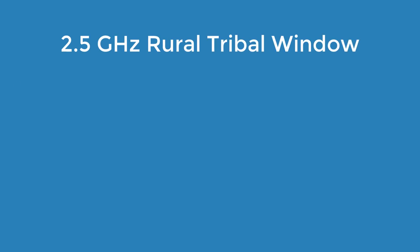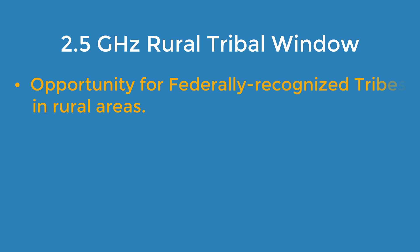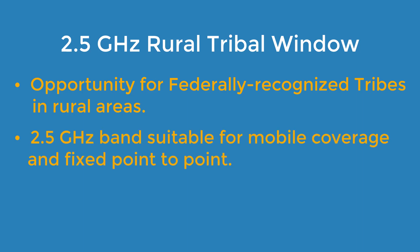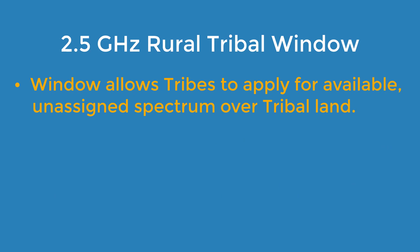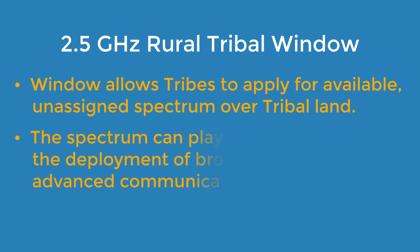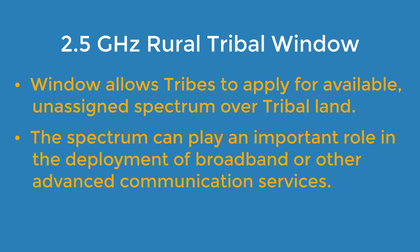Federally recognized tribes have a unique opportunity in rural areas to directly access unassigned spectrum over their tribal lands. The 2.5 GHz band is suitable for both mobile coverage and fixed point-to-point uses and is currently used to provide broadband services by both legacy educational licensees and commercial providers who lease the spectrum. Depending on the tribe's needs, it can play an important role in the deployment of broadband and other advanced communication services.